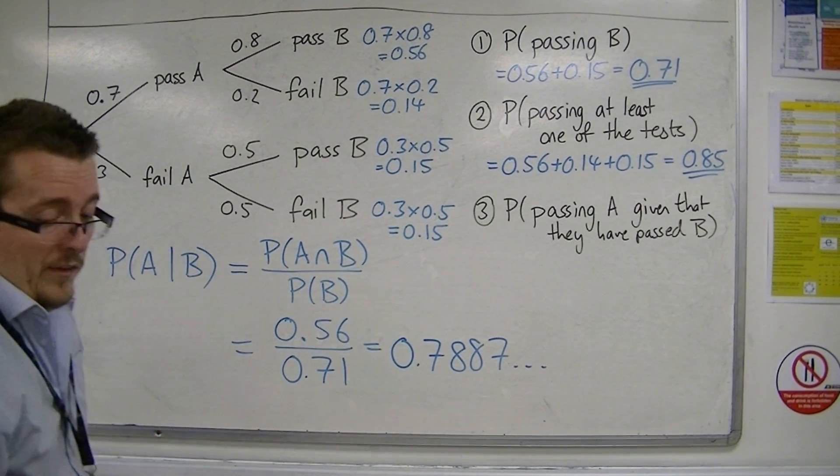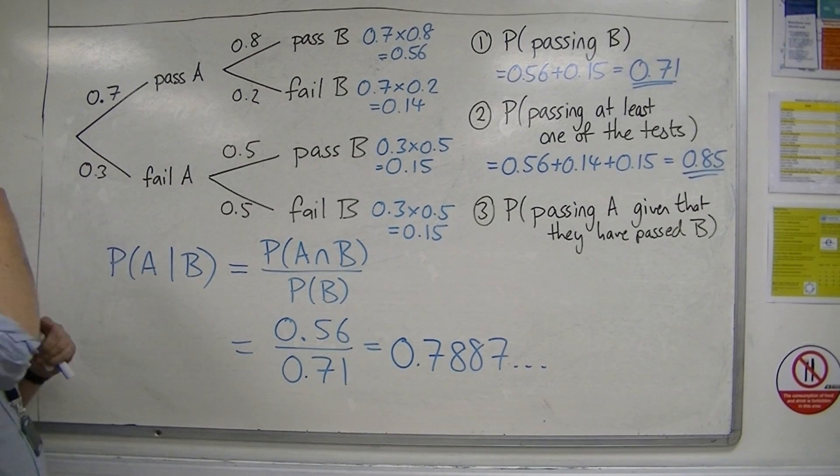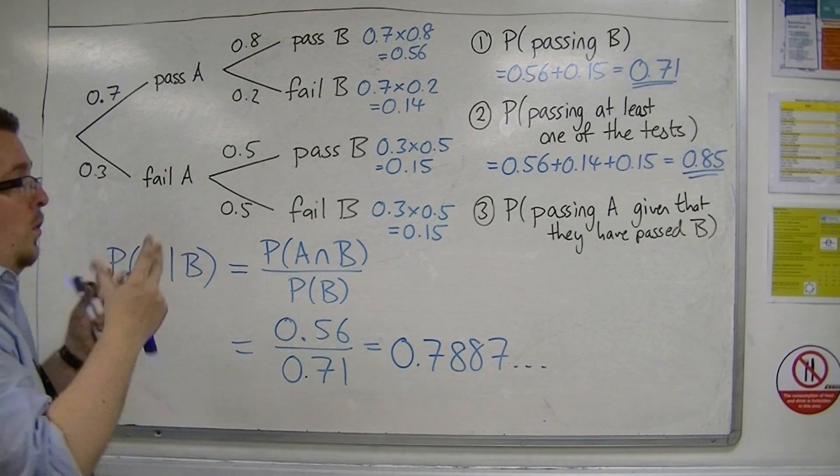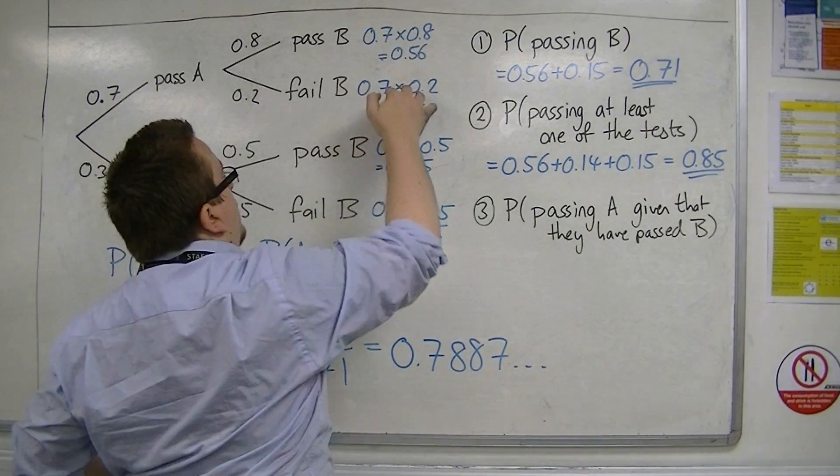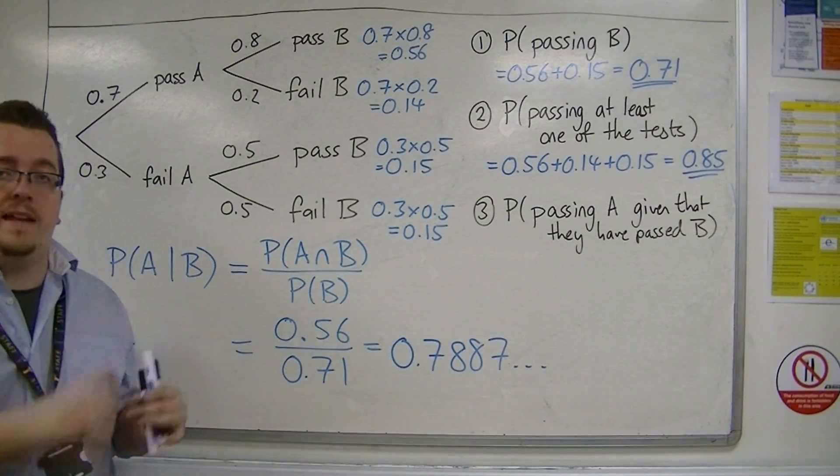That's how a tree diagram works. You multiply along the branches, and if you've got alternative options and you're looking at OR, then you add down the list and pick out the ones you want to add together.